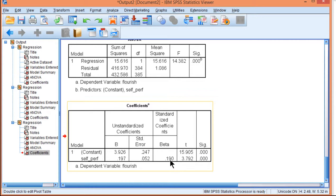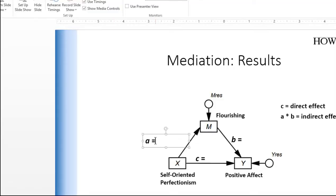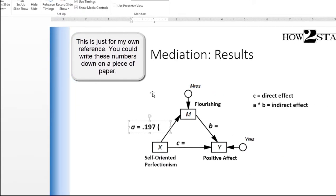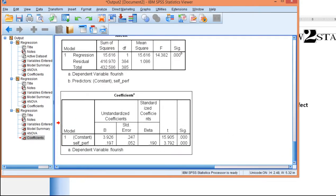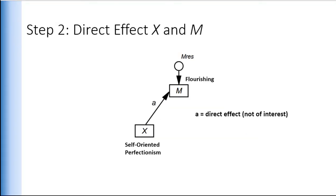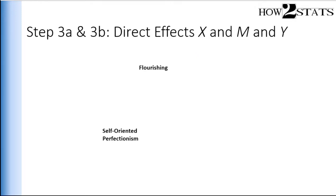In the coefficients table, the unstandardized beta weight is 0.197, statistically significant, and the standardized beta weight is 0.190. I need the unstandardized beta weight and its standard error: a = 0.197 and SE = 0.052. I'll need these values to conduct the Sobel test — to test the statistical significance of the indirect effect. Step two is straightforward; it's just a bivariate regression.